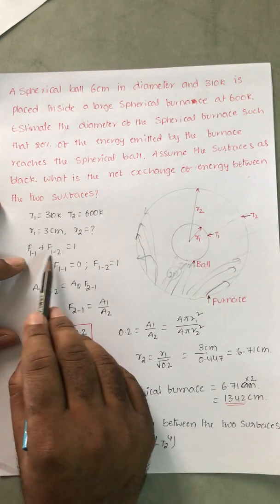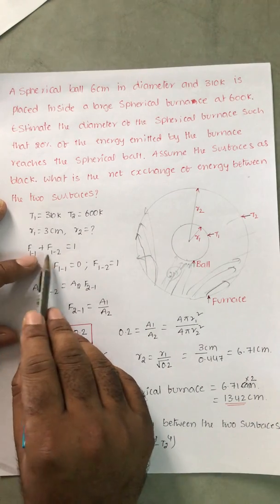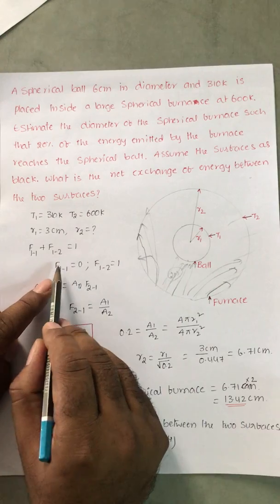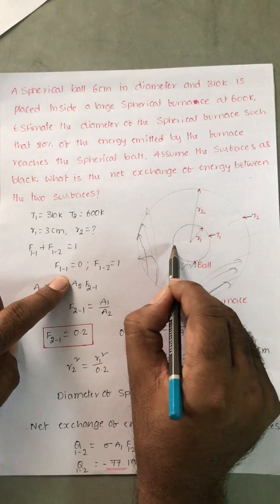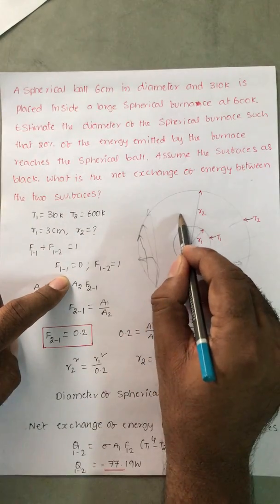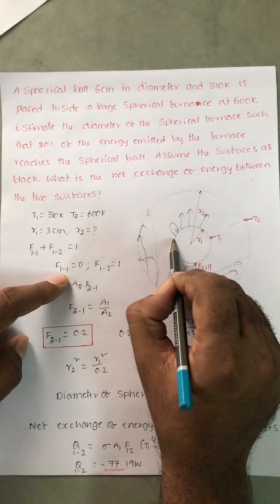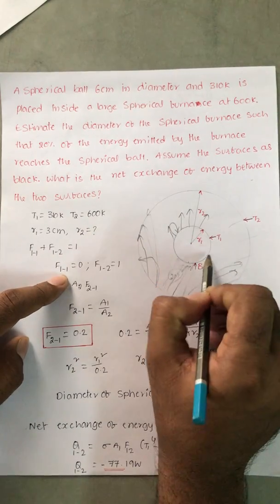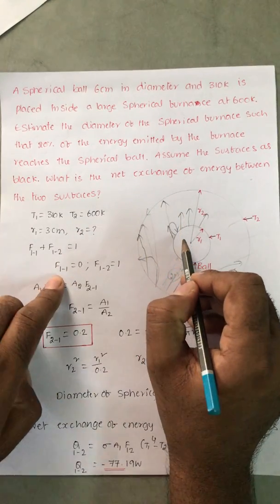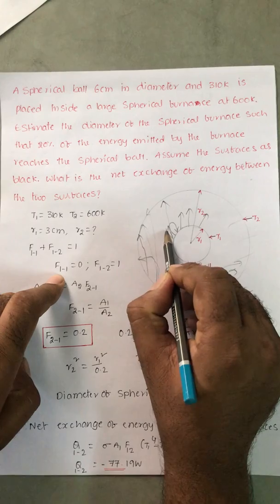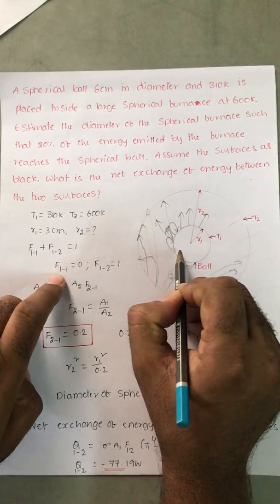F11 plus F12 equals 1, since the sum of all shape factors for any surface is 1. Here F11 is 0 because whatever radiation is emitted by sphere 1 cannot strike itself — it emits outward and will strike surface 2. So F12 becomes 1 and F11 is 0.